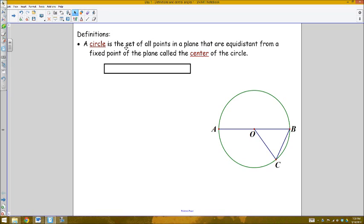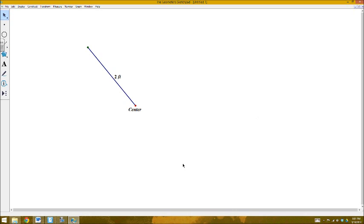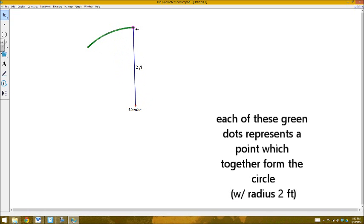So first off, a circle is basically a set of all the points in a plane that are equidistant from a fixed point in a plane called the center of the circle. Graphically what that means is if I look at this red center and I go a distance of two feet away from it, the circle is the set of all of the points which are this distance of two feet. So if I drag that all the way around, I'll get a set of all of these different points that together make up a circle.